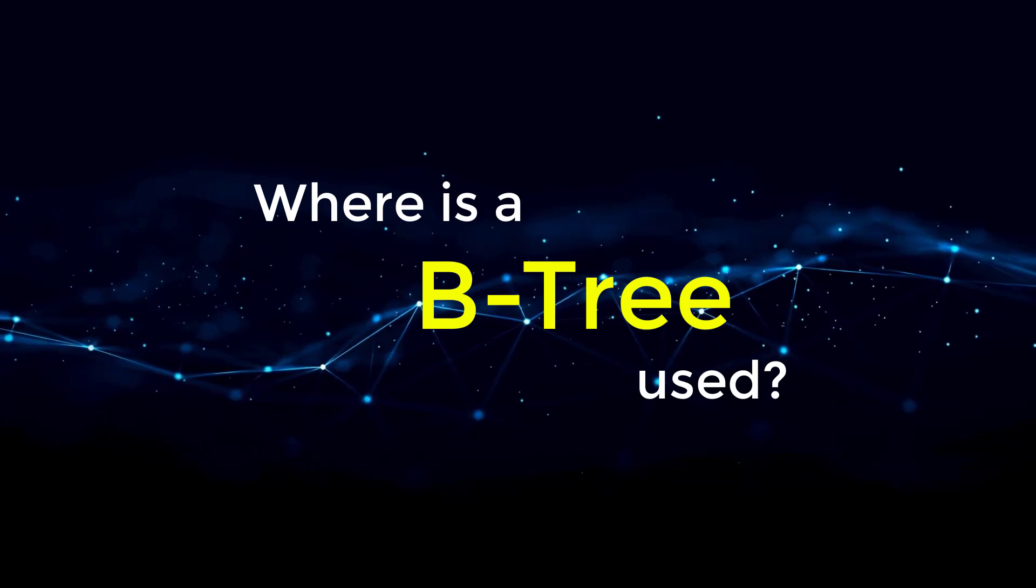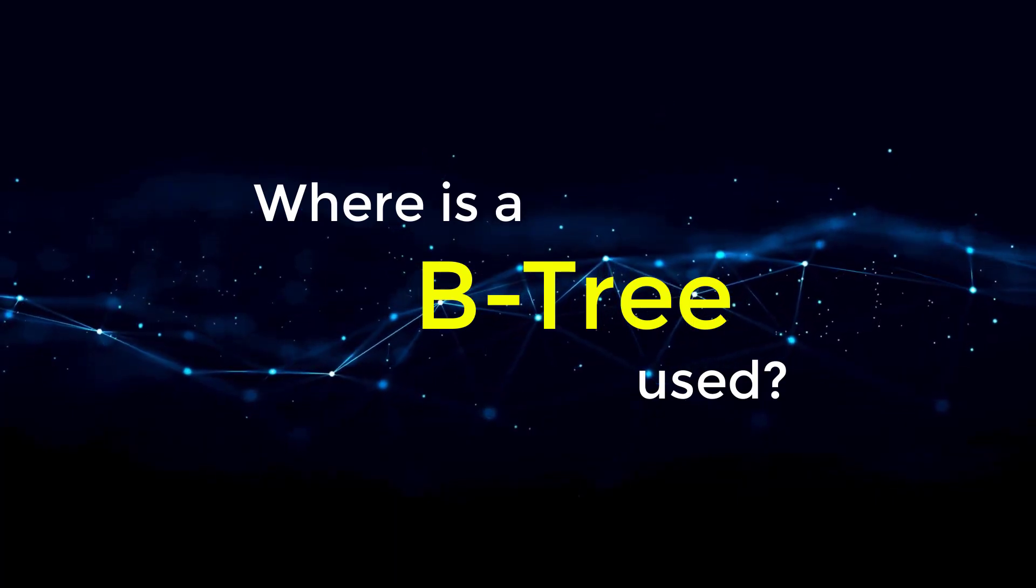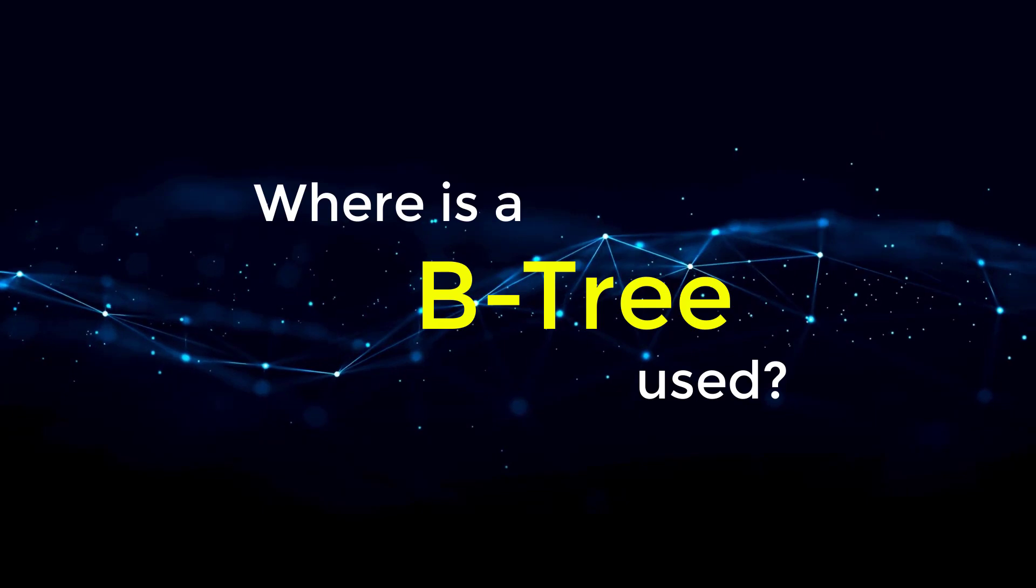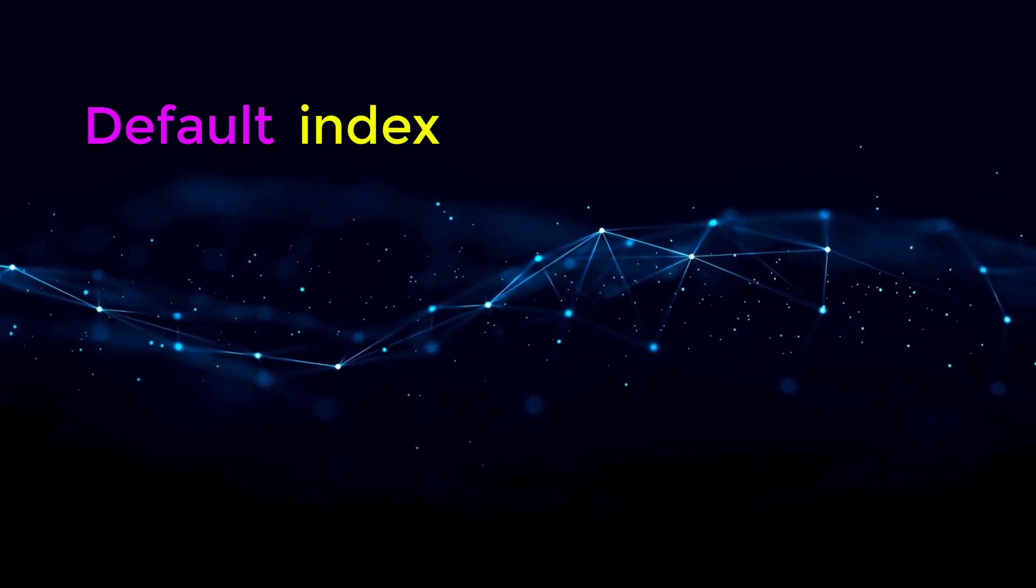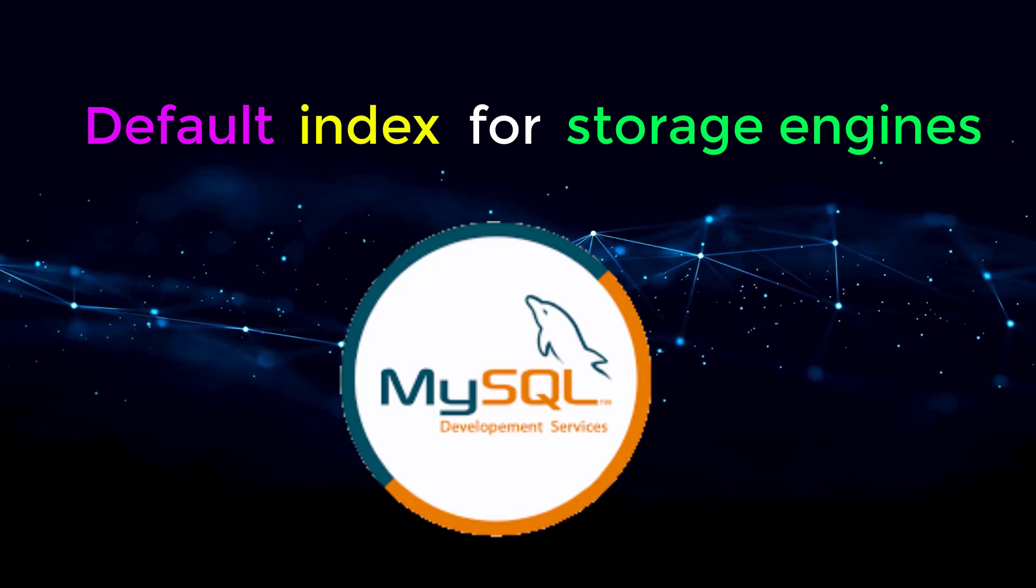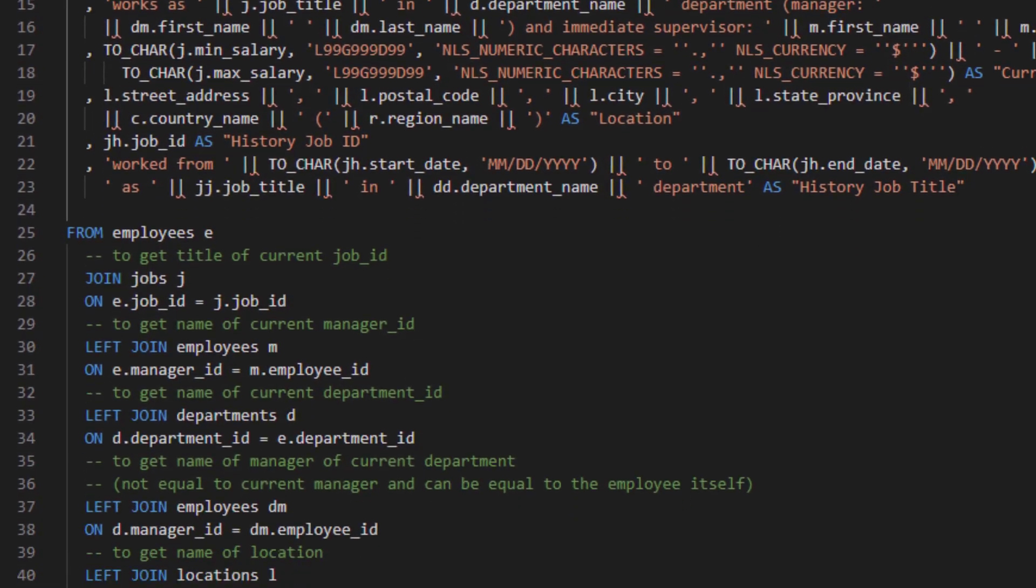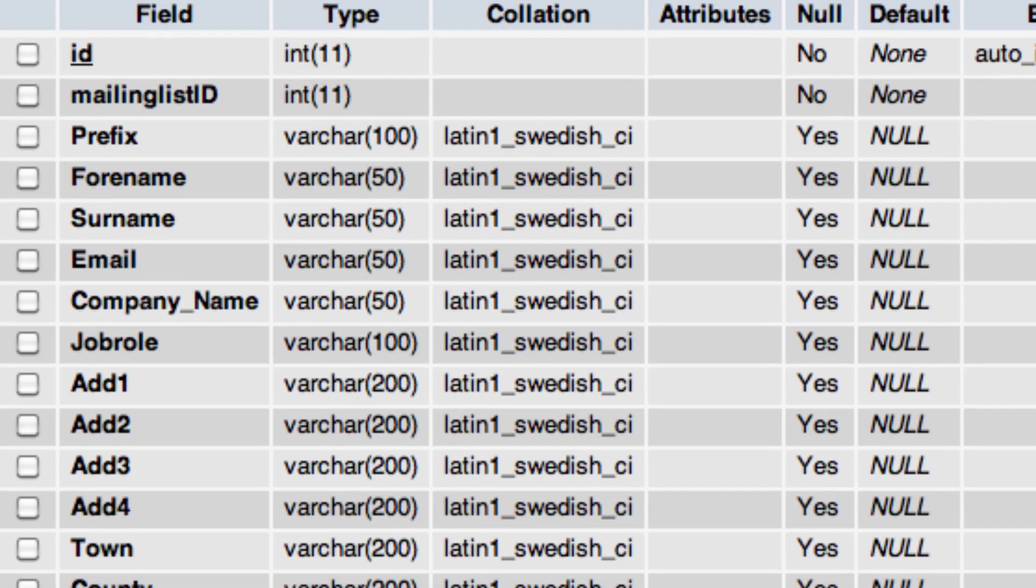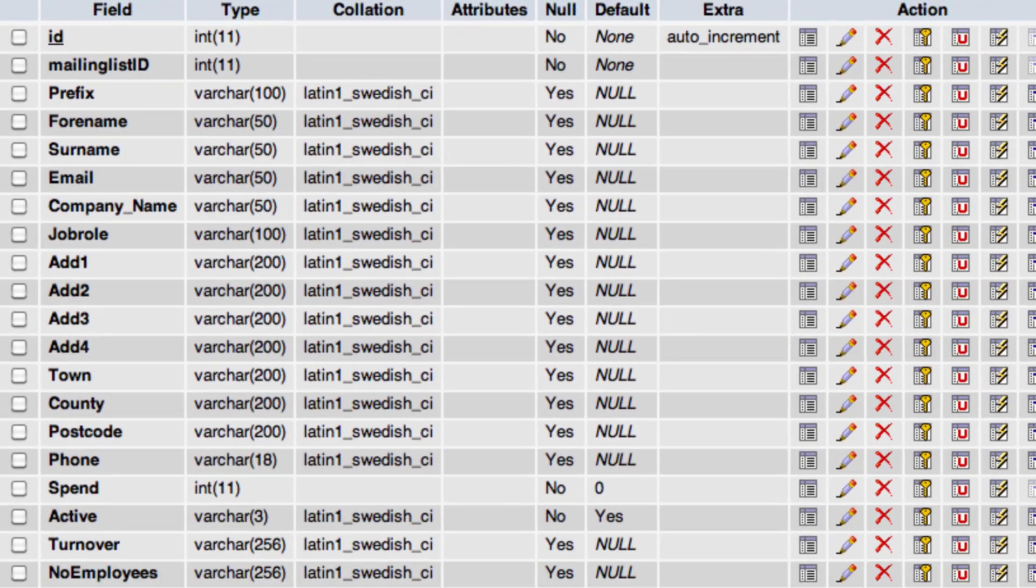So where is this data structure used? You will probably never have to implement one of these from scratch. However, a B tree is the default index for most storage engines, specifically MySQL. The power behind a B tree in terms of storage engines is now you don't have to scan all of the data to find the desired rows.